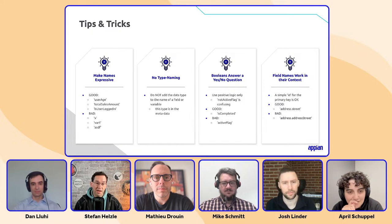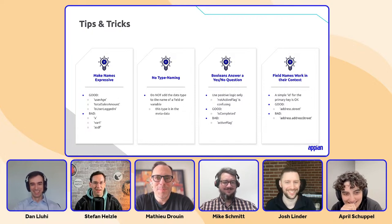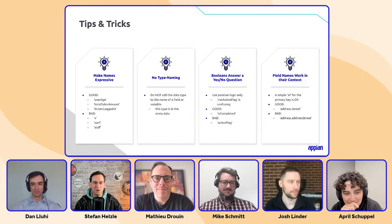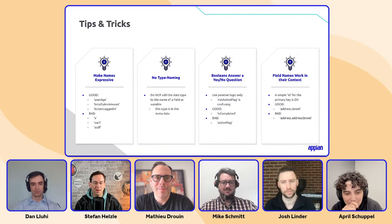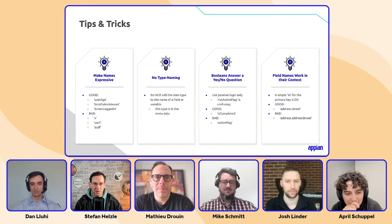Next is node type naming — but Matt, you mentioned you have a different opinion on including the data type, like integer, decimal, or Boolean, in the name of a variable or field. I don't like to do that because in Appian you always see the type of the field. It seems like something we can discuss.